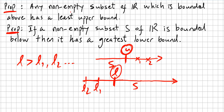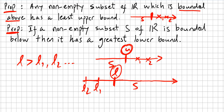Proposition 1: Any non-empty subset of the reals which is bounded above has a least upper bound. So if you have a set S that is bounded above, it will have a lot of upper bounds — X1, X2 — but there will be one, let us call it U, that is the least upper bound. I will provide the proof for this later.